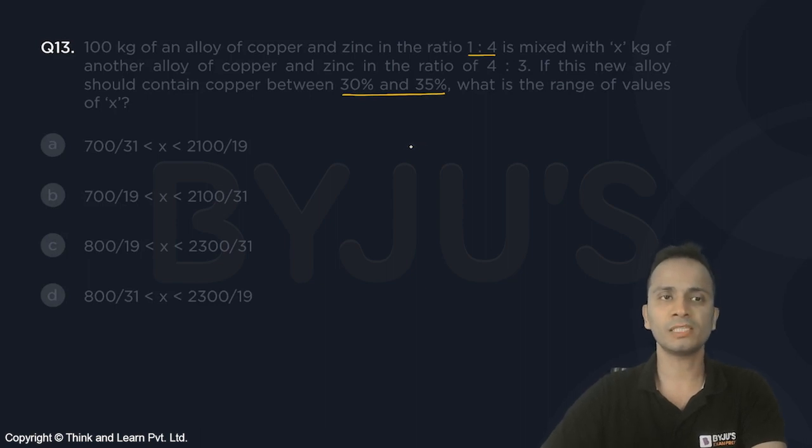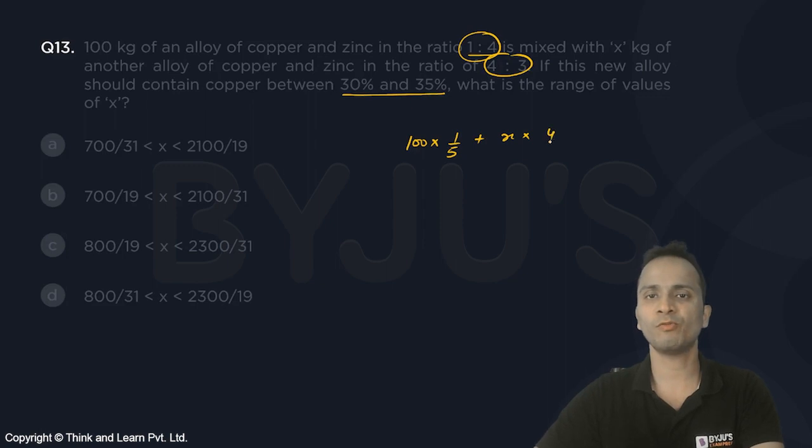So 100 multiplied by the fraction of copper here is 1/5, plus x multiplied by the fraction of copper here is 4/7, divided by 100 plus x.